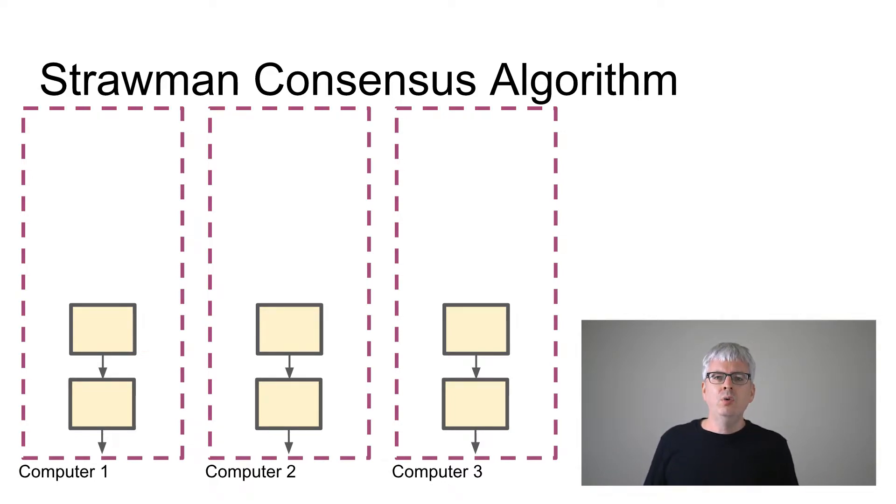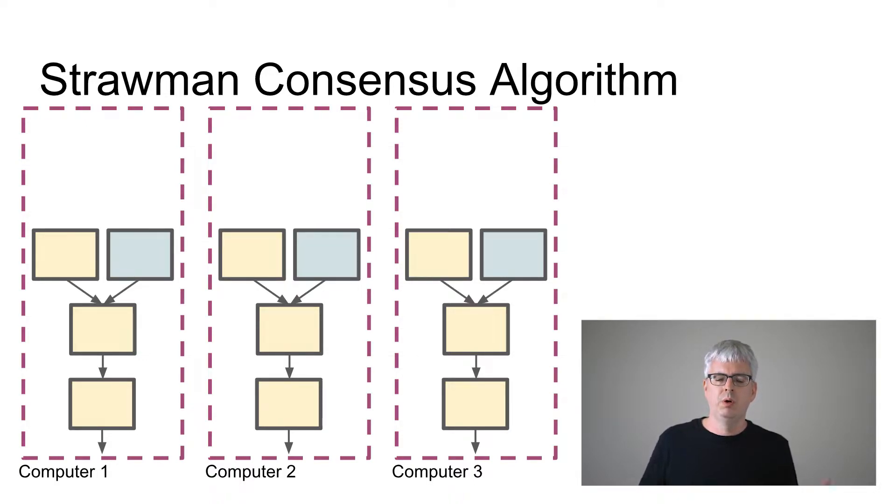Where it fails is if two nodes generate a block at the same time. Then what happens is, for example, here I have computer one and computer three generate a block at the same time, and then they start telling their neighbors about it and their neighbors go, wait, I've just heard about two blocks that point to the same parent, so I no longer have a chain, I've got a block tree. Or in other words, we've forked our blockchain, and we now have two branches to our fork, which we need to figure out, what are we going to do about this?